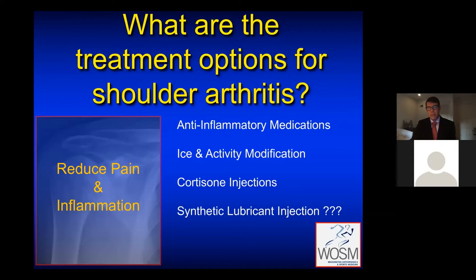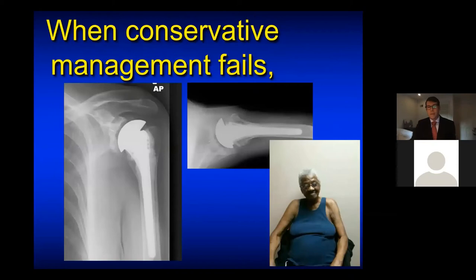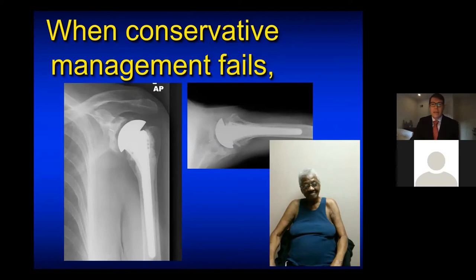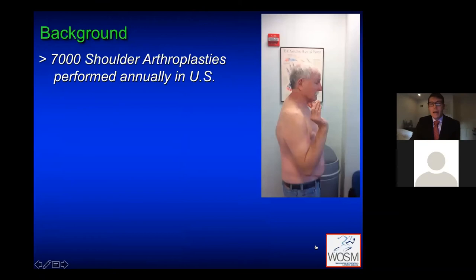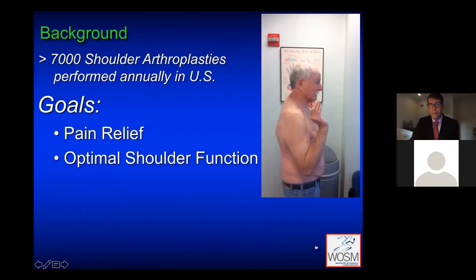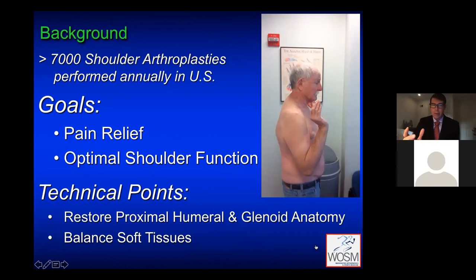When conservative management fails, we move on to arthroplasty. Here is an example of a woman who had a shoulder replacement 14 years ago. She had debilitating pain and we were able to reconstruct the shoulder by putting in a metal prosthesis with a stem that goes into the shaft and then a plastic socket. At the time of her surgery she was 84 and was on narcotics. We were able to restore her motion and give her pain-free function, and she was so happy that she came back four years later to do her other side. Our goals are pain relief and optimal shoulder function, restoring anatomy as well as possible and balancing the soft tissues so that motion is improved.